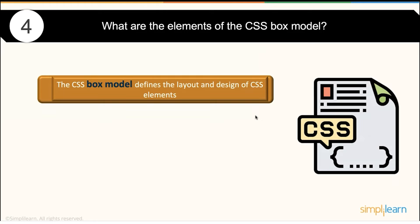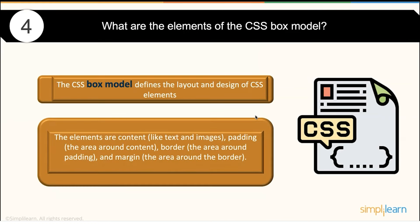What are the elements of the CSS box model? The CSS box model is about offering a layout as part of the design element. The elements include images, text, padding (which is the area around the content), border, and margin. These together make up the CSS box model.